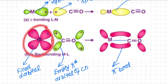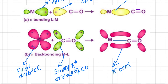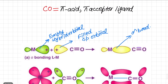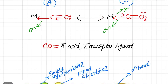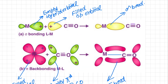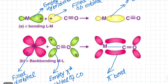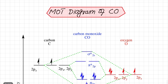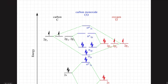A pi bond is formed when the filled d orbital of the metal overlaps with the empty pi star (π*) orbitals of the carbonyl. In this way, a pi bond is formed alongside the sigma bond already present. When this double bond forms between metal and carbon, a double bond exists between carbon and oxygen to retain the valency of four. The question is where this pi star orbital comes from — to understand this we must refer to the molecular orbital theory (MOT) diagram of carbonyl.